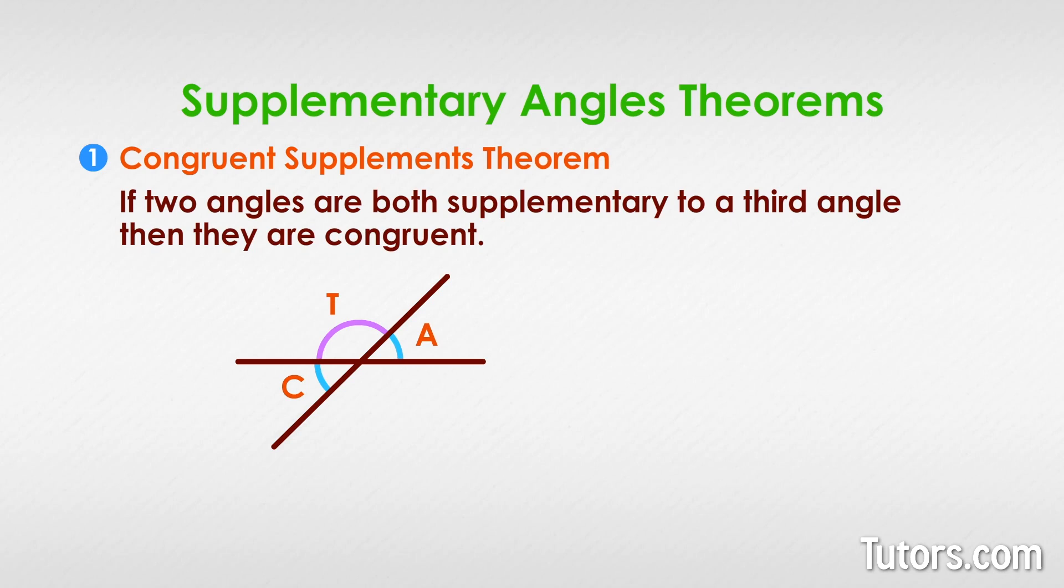We know two true statements from the theorem. One: Angle A plus angle T equals 180 degrees. Two: Angle C plus angle T equals 180 degrees. Since either angle C or angle A can complete the equation, then angle C equals angle A.